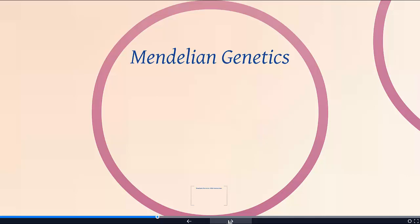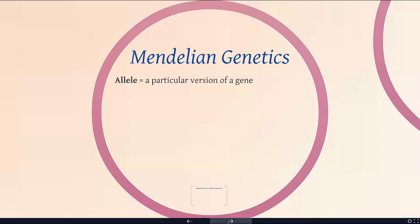They were able to use Mendel's carefully documented studies to establish this idea of dominant recessive alleles and how they might work. So here we're going to talk about basic Mendelian genetics, which is largely what's covered in chapter 7 of your textbook. Then we will go on and talk about non-Mendelian genetics — things that are inherited in different ways — but we'll start with these basics.